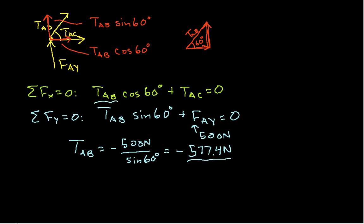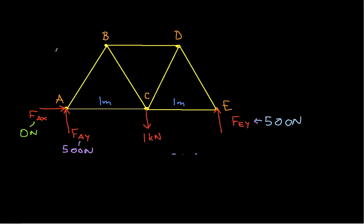Taking this number, plugging it in and solving for T_AC, we find that T_AC is going to be 577.4 newtons times cosine of 60 degrees. Since cosine of 60 degrees is one half, this will be 288.7 newtons. So we now have T_AB and T_AC.